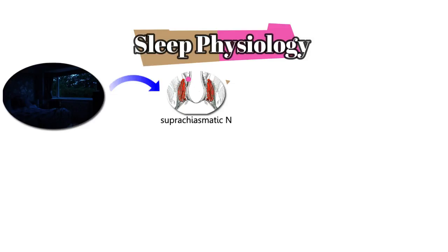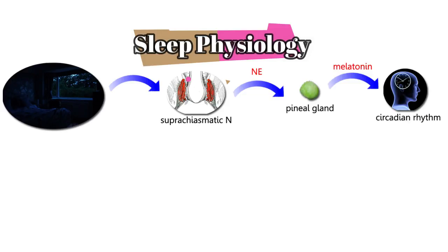When it comes to sleep physiology, here's what we know so far. Usually the trigger is a dark room or dark place, or thinking of sleep, which will trigger the suprachiasmatic nucleus. That will release neuropepterin to stimulate the pineal gland. The pineal gland will release melatonin to start the circadian rhythm. Melatonin is a derivative of serotonin. The circadian rhythm is then going to release prolactin, ACTH, neuropepterin, and melatonin.